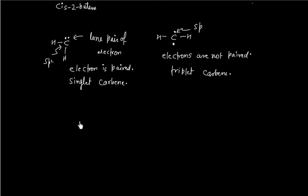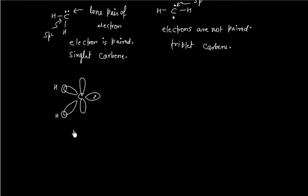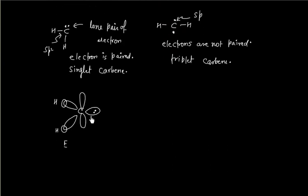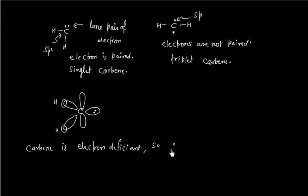If you see the orbital picture diagram of singlet carbene, we will have a carbon-hydrogen bond here and another carbon-hydrogen bond here, with a lone pair of electrons here, and one p lobe that is empty. Carbene acts as an electrophile — these are electron-deficient molecules. Carbene has only 6 electrons, so carbene is an electron-deficient molecule and it acts as an electrophile.